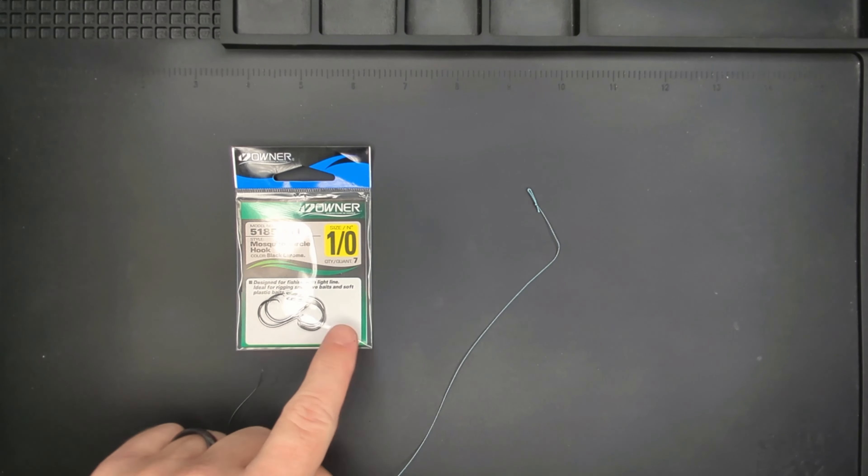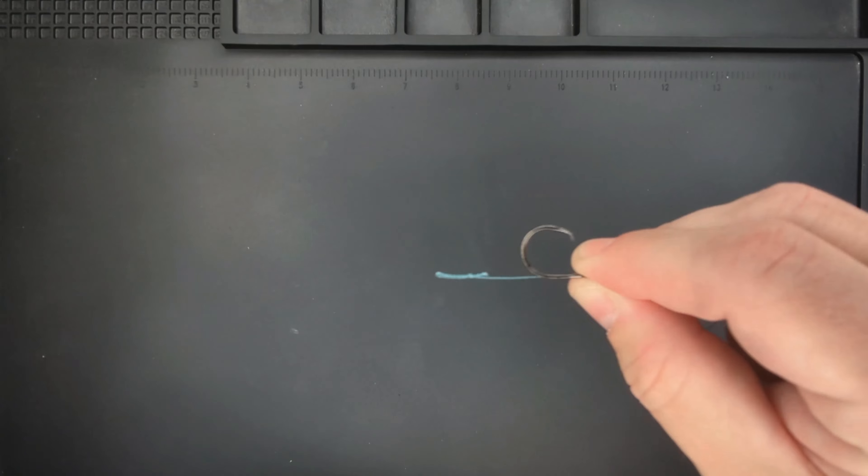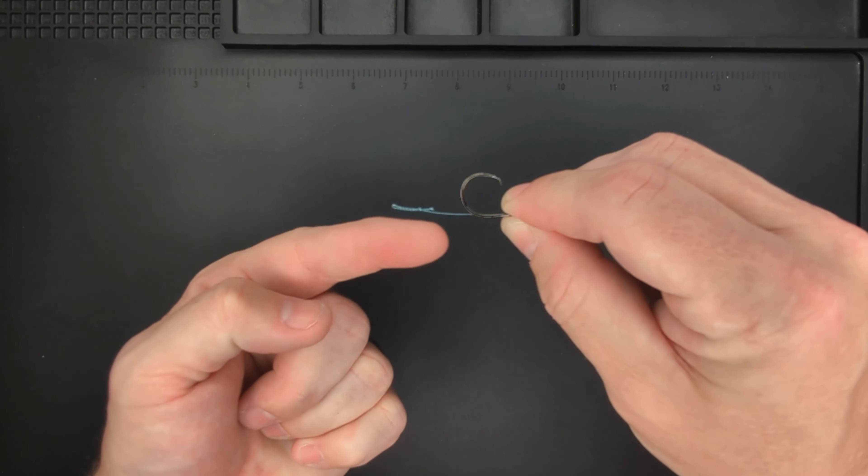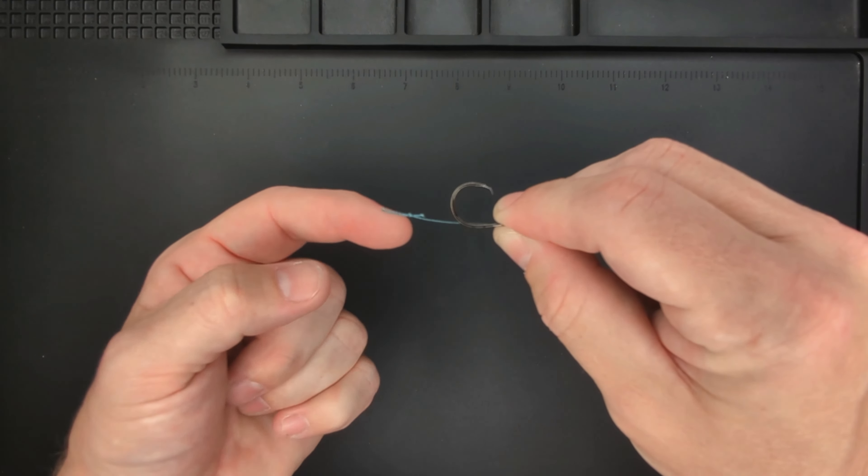Now we're going to take one of our circle hooks and tie it onto our hair rig with a knotless knot. When the rig is fully tied you want approximately one quarter of an inch of your hair rig extending beyond the shank of the hook.